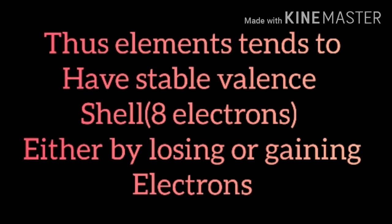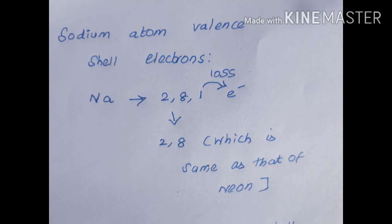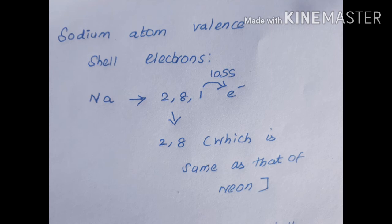Let us see an example — sodium and chlorine. The atomic number of sodium is 11, which equals the number of electrons. Atomic number is the total number of electrons or protons in a particular atom — proton and electrons are equal in number. So the atomic number of sodium is 11, indicating 11 electrons are present in the sodium atom. I can write the electron configuration of sodium as 2, 8, 1.